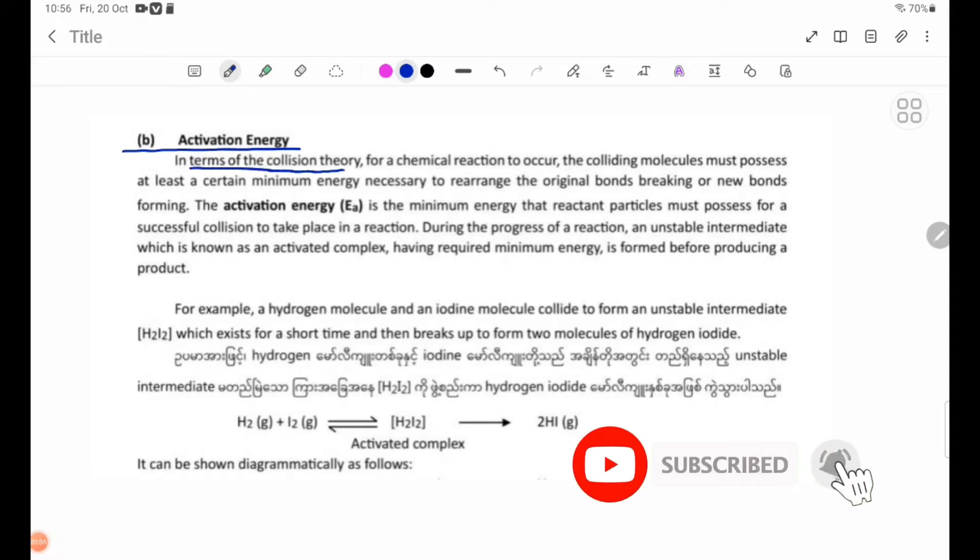In terms of the collision theory, for a chemical reaction to occur, the colliding molecules must possess at least a certain minimum energy necessary to rearrange the original bonds, breaking or forming new bonds.